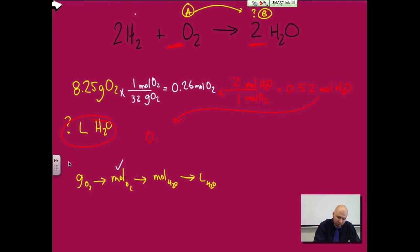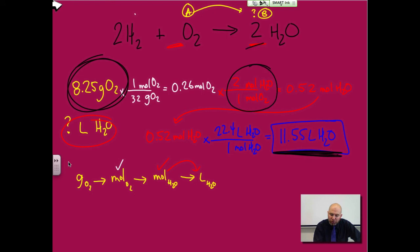Now I'm here, I can convert to liters. Moles of H2O to liters of H2O, 1 over 22.4 because that's the conversion. So times 22.4 and I get 11.55 liters of H2O. So if I was giving you 8.25 grams of oxygen, you would produce 11.55 liters of water.